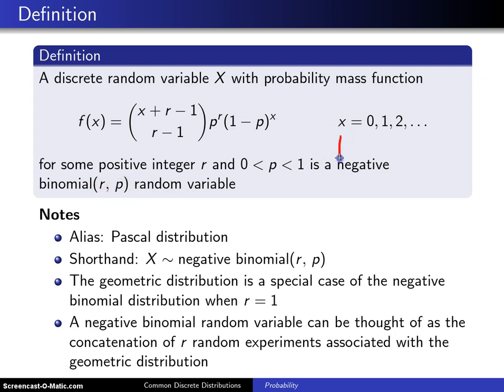Note that n is lowercase here, because we're going to have the same issue we had with the geometric distribution — there will be another negative binomial random variable denoted with a capital N.